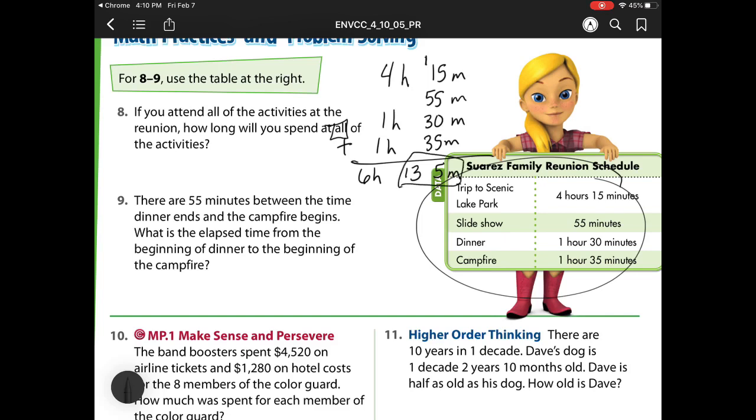But notice here I can regroup these into hours. So 60 minutes equals 1 hour. 60 plus 60 is 120, which would be 2 hours. So I can take away 120 minutes and trade that for 2 hours. So 5 minus 0 is 5. 3 minus 2 is 1. So I'll have 15 minutes. And remember, I just traded my 120 minutes for 2 hours. So I need to add 6 plus 2, which is 8. So total I'd be there for 8 hours, 15 minutes.